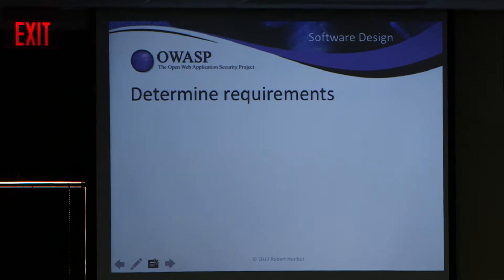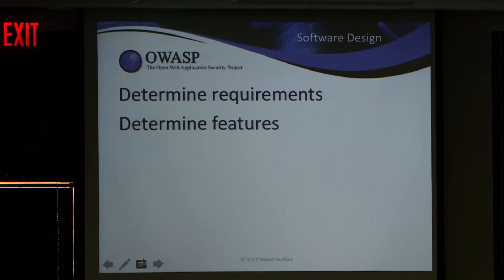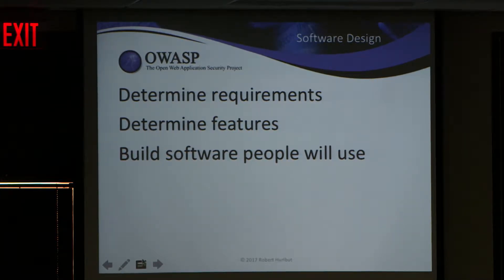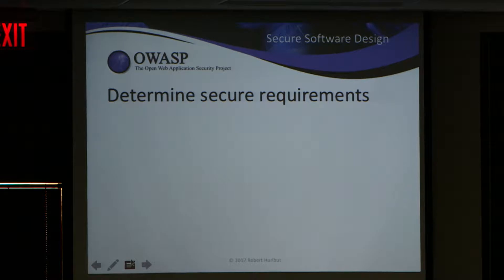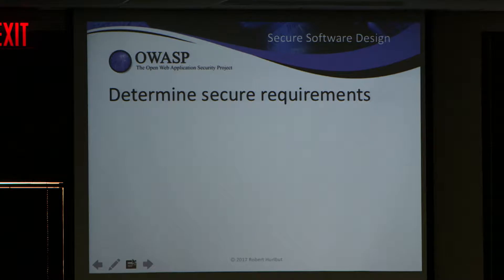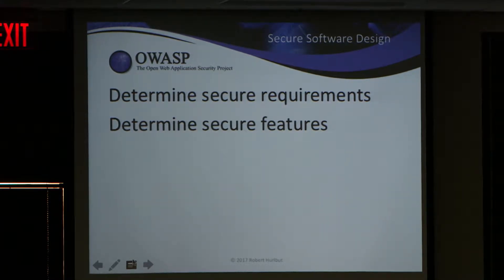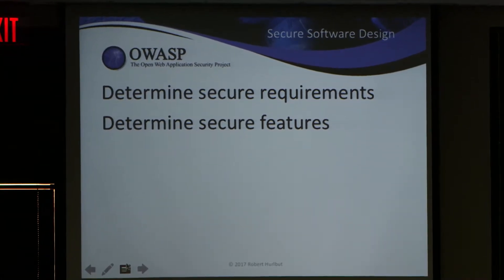When building software, you think about requirements — what does this need to solve — and features, how to implement those requirements. Our goal should be to build software people will actually use. Similarly, with secure software design, we think about secure requirements: what's fundamentally important for security. We think about features like login pages, access control, logging, and other things that need to be in place to make the application secure.